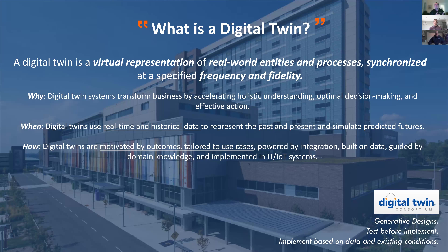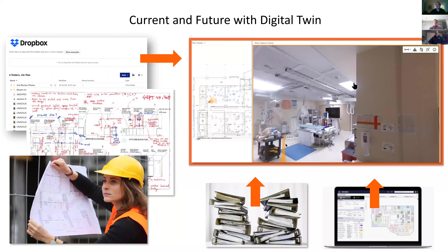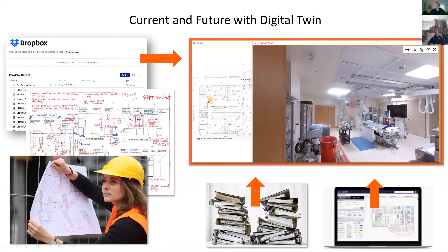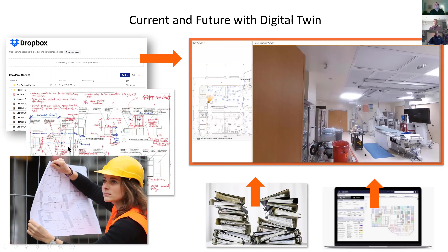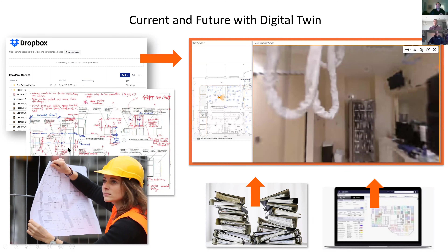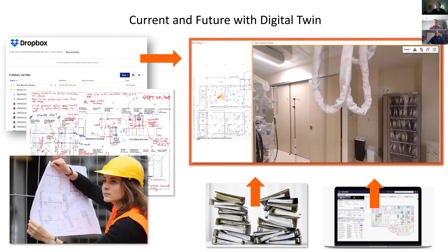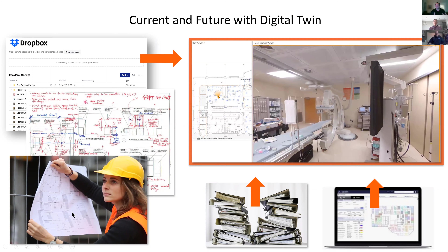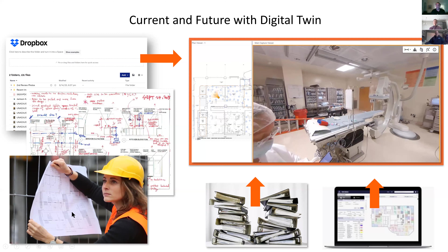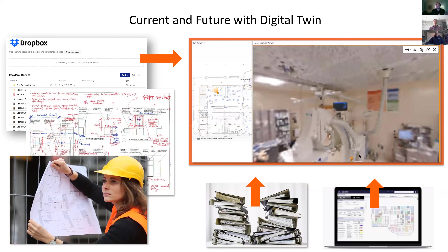A lot of people think digital twin means a 3D model — it's much more than that. It's a digital asset, a process, and information all together. We use this in a generative design process so we can do scenarios before we implement — test before implement, validate before investing, troubleshoot before we have problems on site. The benefits are significant because we're reducing touchpoints back and forth to facilities and reducing rework that traditionally happens on site.